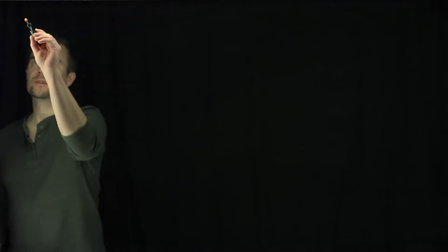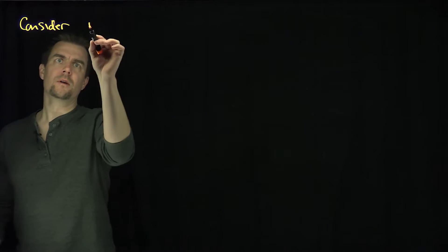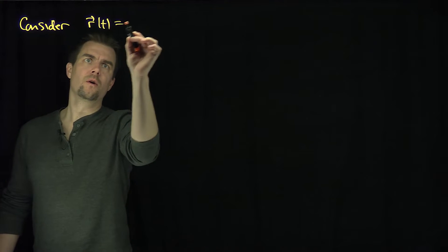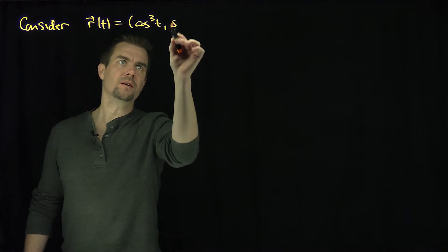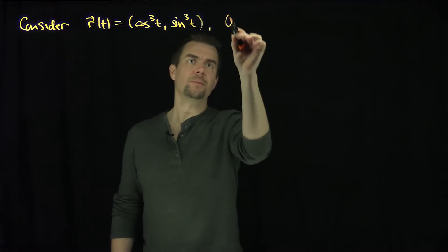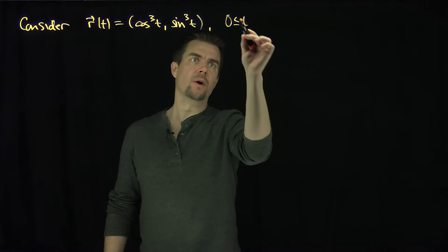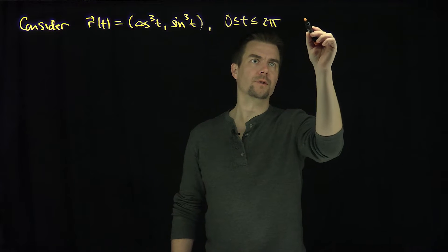Hello, students. In this video, we'll use Green's theorem to find the area inside a special hypocycloid called an asteroid. Let's consider the curve r of t, which is cosine cubed of t, sine cubed of t, for t between zero and two pi. This is the asteroid curve.